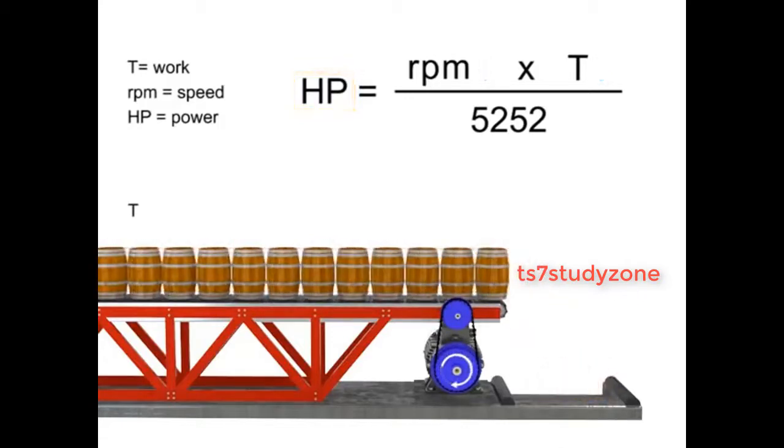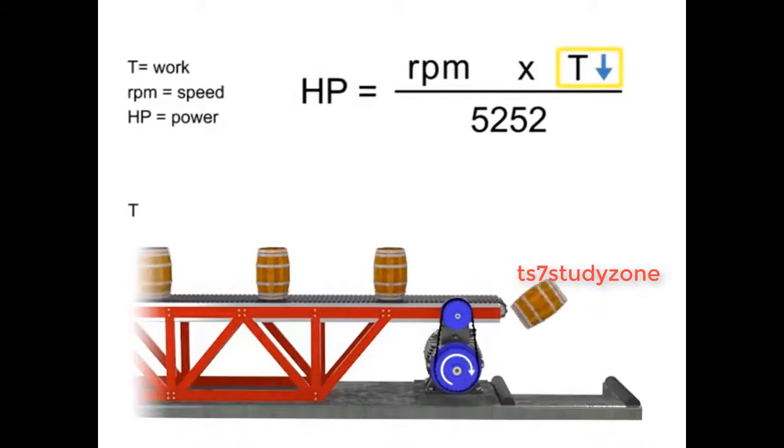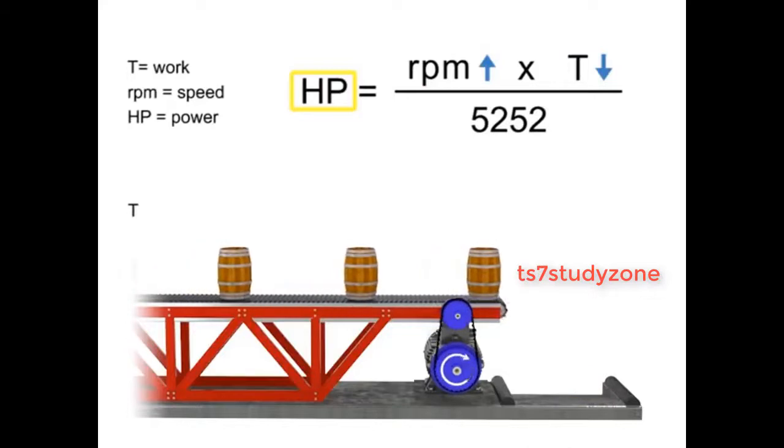If the torque decreases, the speed of the conveyor increases and the horsepower generated by the motor remains constant.